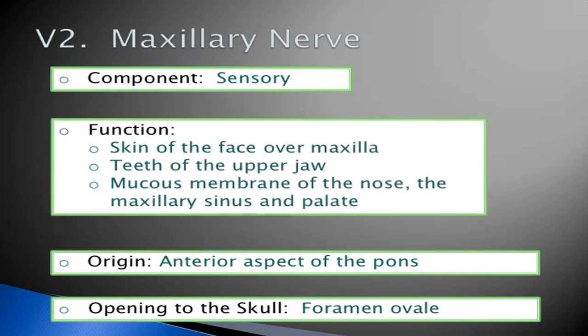The maxillary nerve's component is sensory. Its function covers the skin of the face over the maxilla, teeth of the upper jaw, mucous membrane of the nose, maxillary sinus, and palate. Its origin is the anterior aspect of the pons. The opening of the skull is the foramen rotundum.